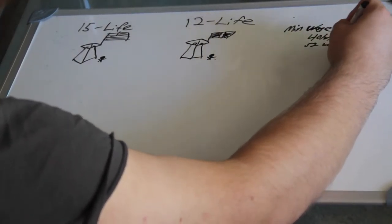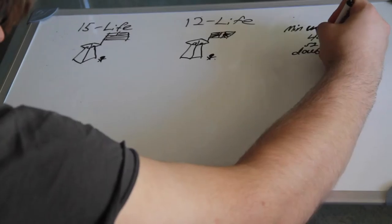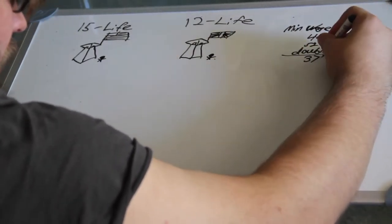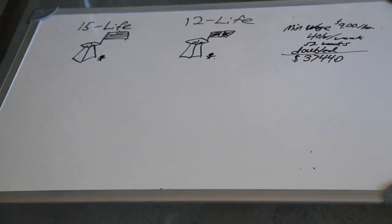In 2014, the minimum wage in California was $9 per hour. Over a 40-hour work week, that equates to an annual salary of around $18,000.